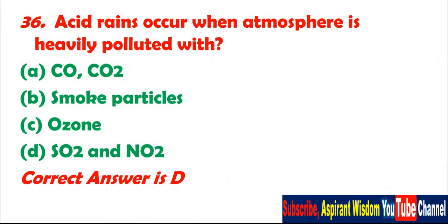Question 36: Acid rains occur when the atmosphere is heavily polluted with: A. CO and CO2. B. Smoke particles. C. Ozone. D. SO2 and NO2. Correct answer is D.